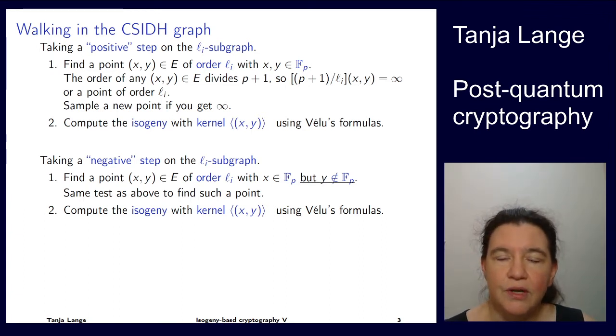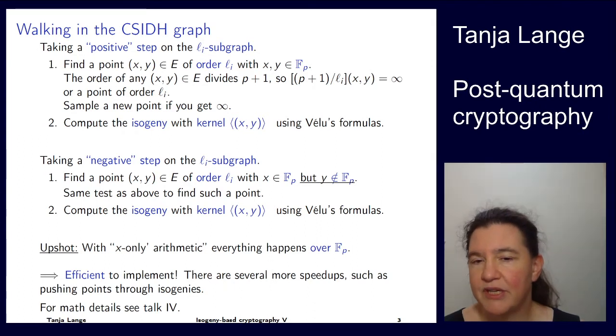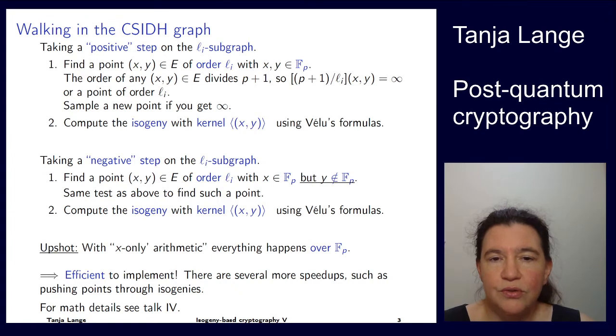If you watched lecture four then you now know that this is taking an ideal class where the points have Frobenius corresponding to minus p. This is fairly nice for the implementation because everything is just over Fp. We don't need to worry about extension fields so it's fairly efficient. If you actually want to look into the details, I highly encourage you to look into the CSIDH paper and the many follow-up papers.